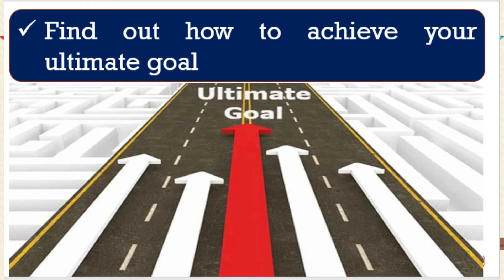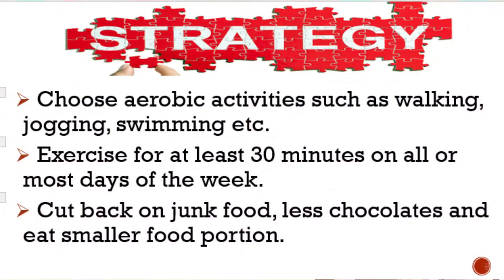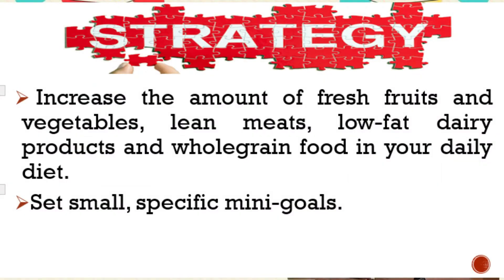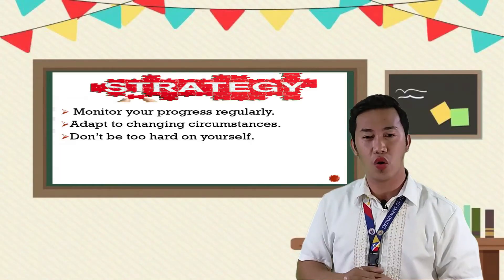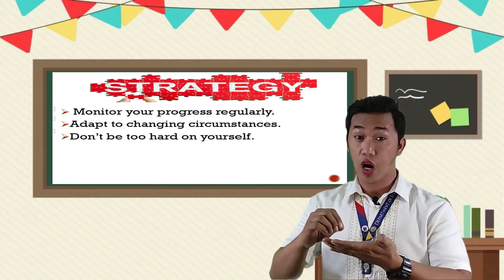Next, find out how to achieve your ultimate goal. These are effective strategies: choose aerobic activities such as walking, jogging, swimming, etc. Exercise for at least 30 minutes on all or most days of the week. Cut back on junk food, less chocolates, and eat smaller food portions. Increase the amount of fresh fruits and vegetables, lean meats, low-fat dairy products, and whole-grain food in your daily diet. Set small, specific mini-goals, then monitor your progress regularly.